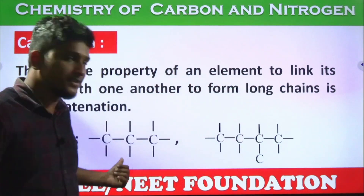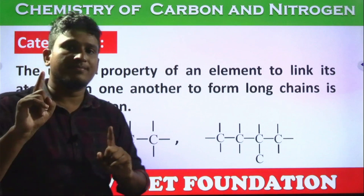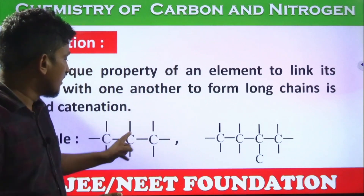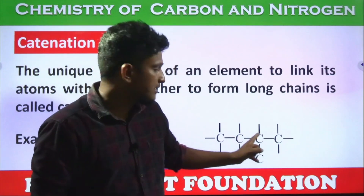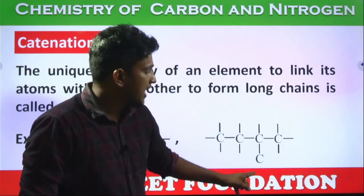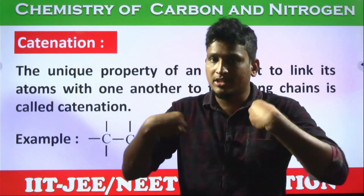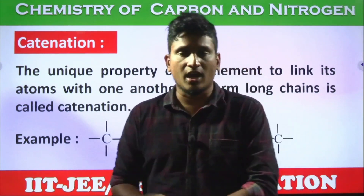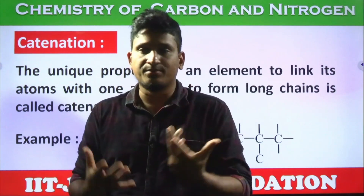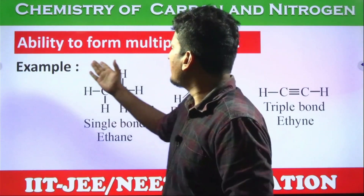Look at the examples: carbon bonds to another carbon, and total four bonds are formed for each carbon — ultimately satisfying the tetravalency. In the second example, carbon's four bonds are completely filled, and the chain continues further — it doesn't end. This self-linking, where carbon combines with its own atoms, is called catenation, and it's why we have a wide variety of carbon compounds.